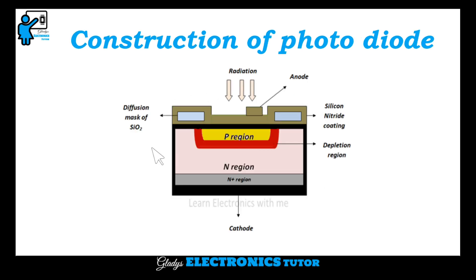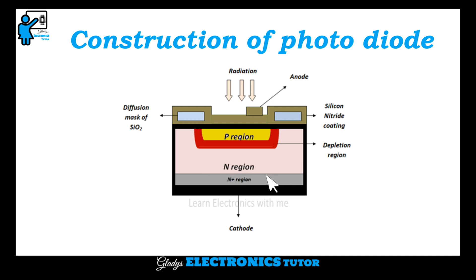This is the construction of photodiode. This is the anode terminal and this is the cathode terminal. This is the silicon nitride coating and this is the diffusion mask of silicon dioxide. This is the inactive region. Here this is the highly doped N-plus region, and this is the N region, and this is the P region.